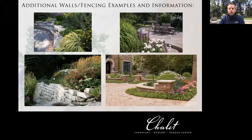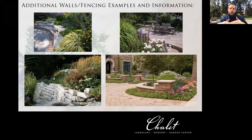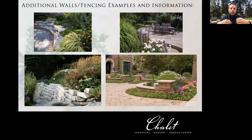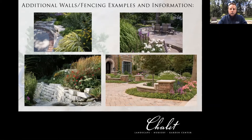Bottom right shows a custom wall we did — intentionally low, not meant to create privacy or be in your face, but basically a transition between the driveway and the garden space. Simple ground cover planting around the driveway, then that low wall. As you walk through it, it creates a subconscious feeling of entering a new space. It also creates a design structure year-round — a framework for that front yard outdoor space — with intentionally taller perennials behind it so you can see them peeking up over the wall.